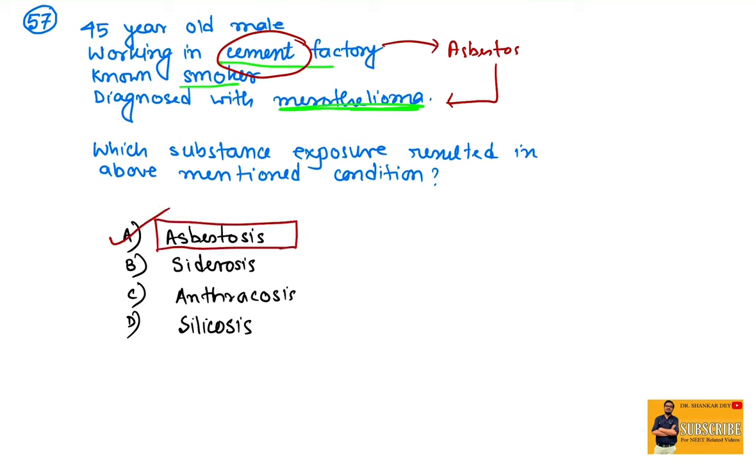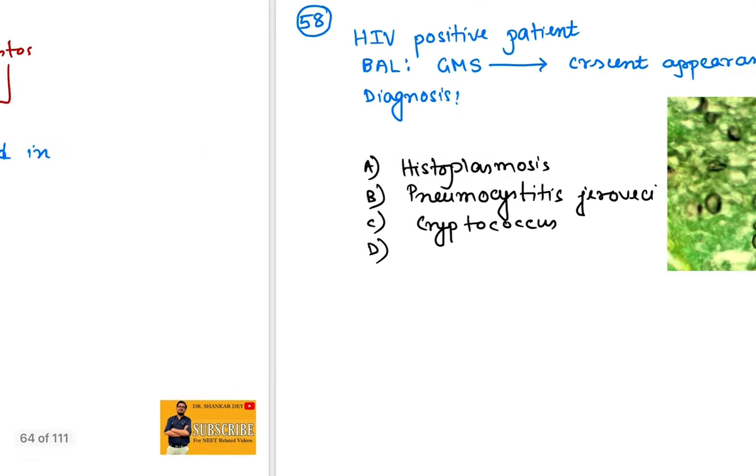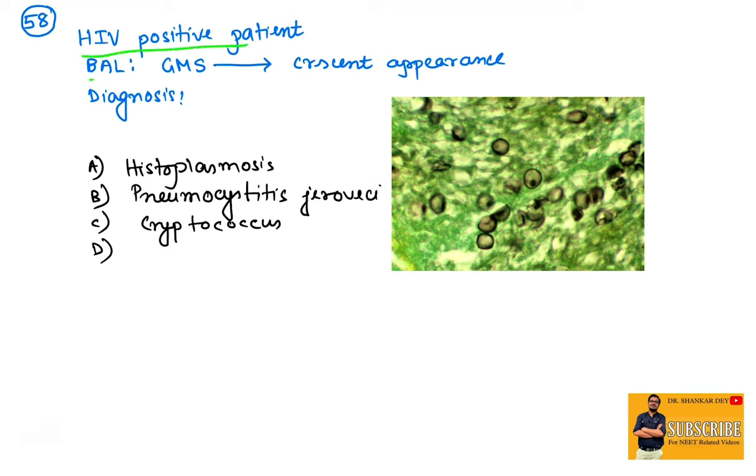Question number 58: HIV positive patient. Bronchoalveolar lavage, Gomori methenamine silver stain shows crescent-shaped appearance or crushed ping-pong ball appearance. This shows multiple crescent-shaped structures or crushed ping-pong ball appearance. This is suggestive of pneumocystis in an immunocompromised patient, a type of opportunistic infection. HIV positive patient with Pneumocystis jirovecii pneumonia showing crescent-shaped structures or crushed ping-pong ball appearance.